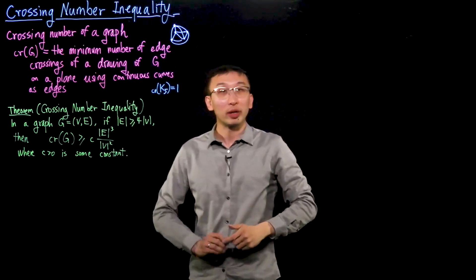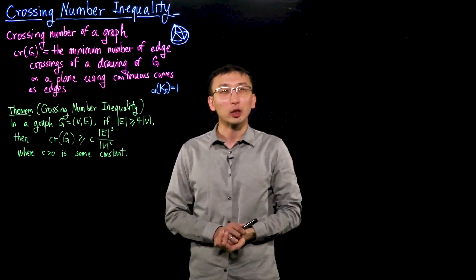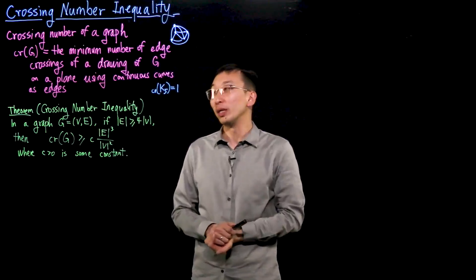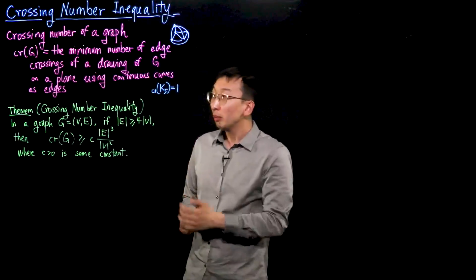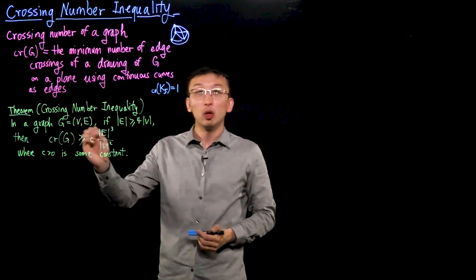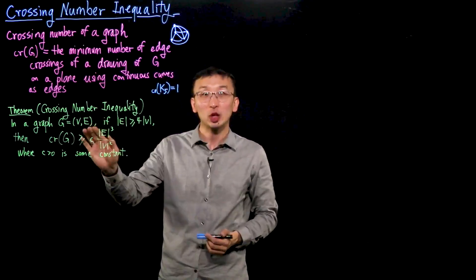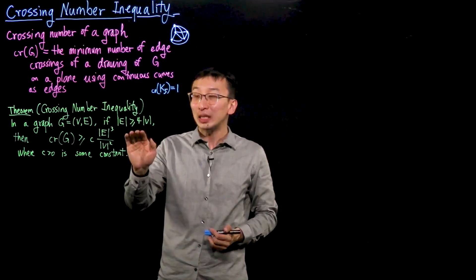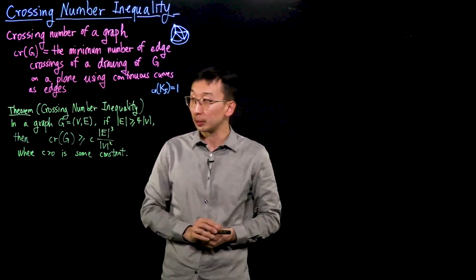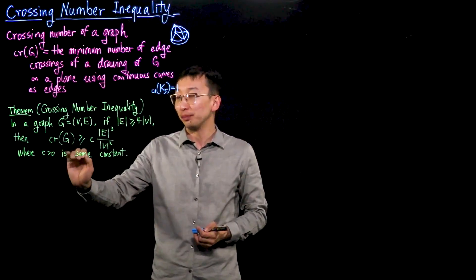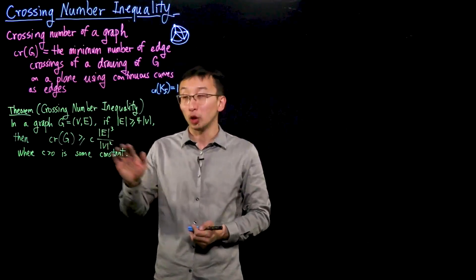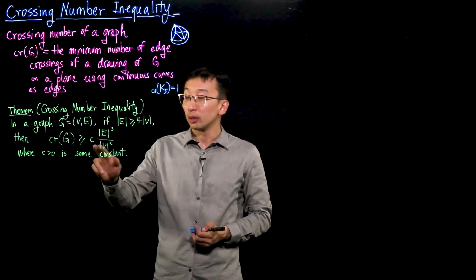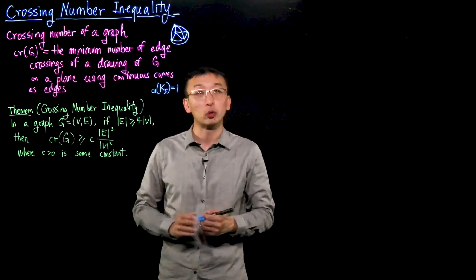If you give me a graph with lots and lots of edges, should I expect that its crossing number is necessarily high? Turns out that's what the crossing number inequality always guarantees. The theorem says that in a graph G with vertex set V and edge set E, if |E| is at least four times the number of vertices, then the crossing number of G is at least on the order of |E|³ divided by |V|², where C is some absolute constant.